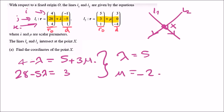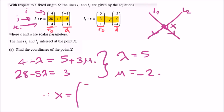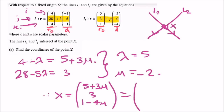Substituting μ equals negative 2 into L2's equation gives the position vector of X as (negative 1, 3, 9).